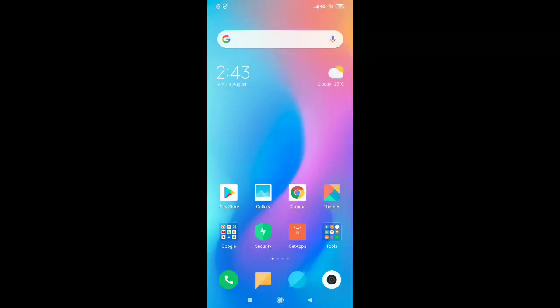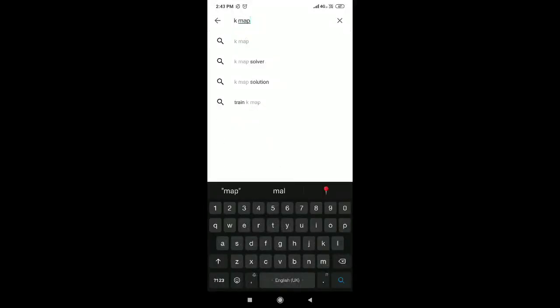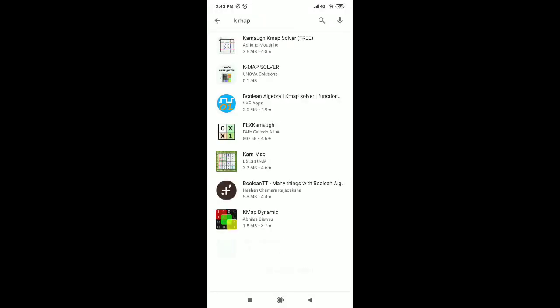First of all, just go to the Play Store and then on the search bar on top of your screen, click on that and type the name of the application, that is K-map, and click on the search button.